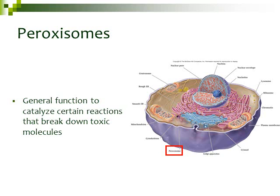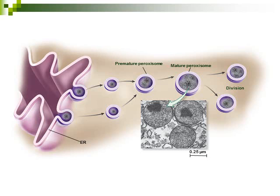Another type of structure is called the peroxisome. Peroxisomes have a general function to catalyze or break down certain toxic molecules in the cell, helping to protect the cell from different toxins. These peroxisomes contain certain enzymes that perform these functions. Because they contain a protein enzyme, they start off in the rough ER. A little vesicle then breaks off with that enzyme, and the enzyme helps to turn that vesicle into a peroxisome.